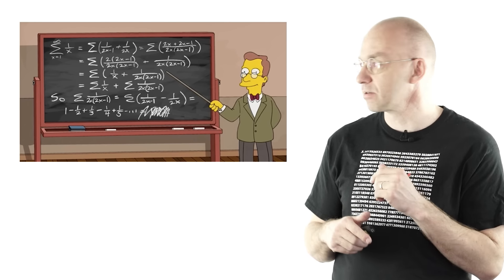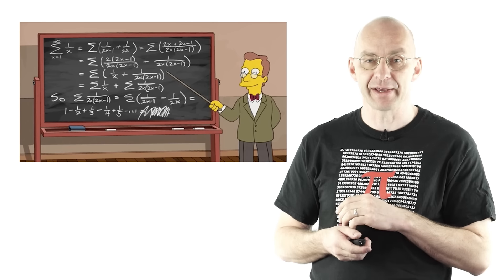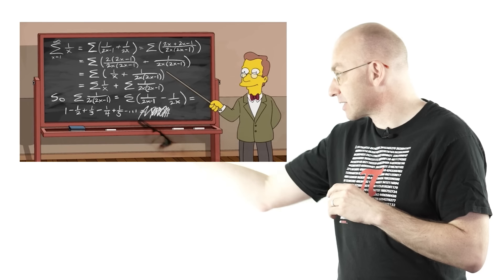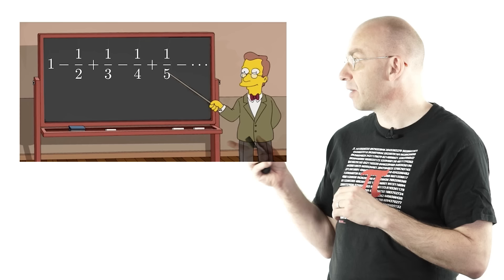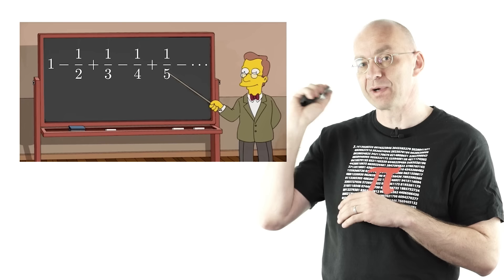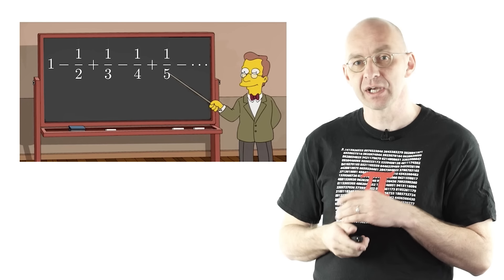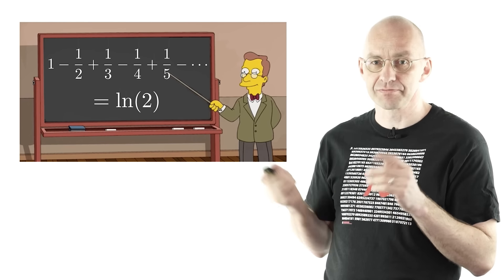For that I will return to this blackboard that I found in The Simpsons and discussed in this video up there, particularly that infinite series down there at the bottom. It's 1 minus 1/2 plus 1/3 minus 1/4 plus 1/5 all the way to infinity. An infinite series with sum log 2, about 0.69.